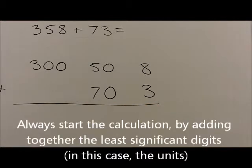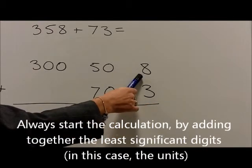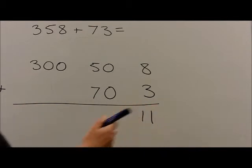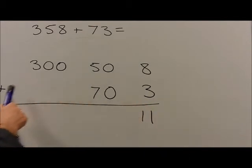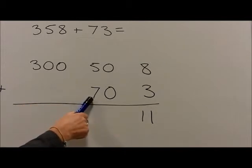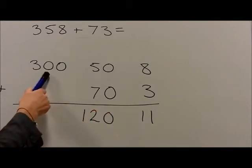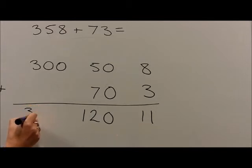We then add them together, starting with the units first, and 8 plus 3 is 11. 5 tens, 50, plus 7 tens, 70, gives us 12 tens, which are 120. And then 300 is added to 0, which leaves us as 300.